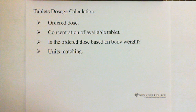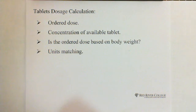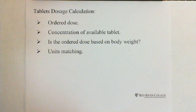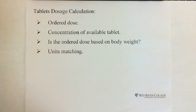The first one is ordered dose — this is the dose ordered by the doctor, so when you read the question, pay attention to the information from the doctor: the ordered dose. The second is the concentration of the available tablet. And the third is the ordered dose based on body weight, because a lot of medication is related to body weight.